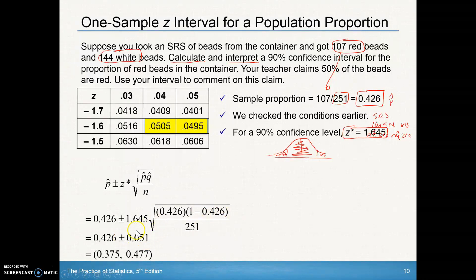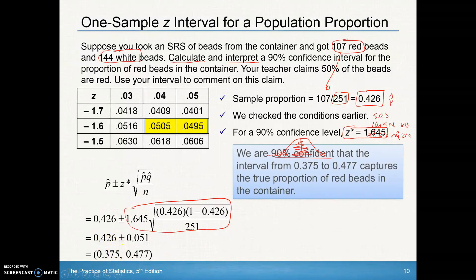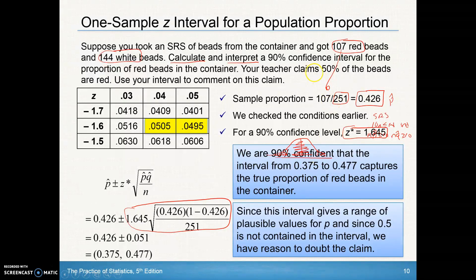And there's the margin of error here right now. That margin of error is calculated by this whole part. So you can either write it like this or write it as an interval. So what we say is, we are 90% confident that the interval from 0.375 to 0.477 captures the true proportion of red beads in the container. Now, my teacher said that it should be 50%. And if I look at that, 50% is not within that range. Since this interval gives a range of plausible values for p, and since 0.5 is not contained in the interval, we have reason to doubt the teacher's claim.